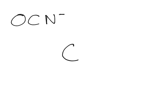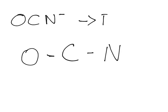Let's look at the following compound: O, C, N minus. We'll have the carbon in the middle, with an oxygen to one side and a nitrogen to the other side. Because this has a negative charge, this is telling us that the formal charge is minus one. So we will result in a formal charge of minus one.